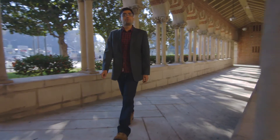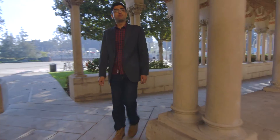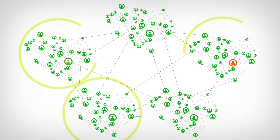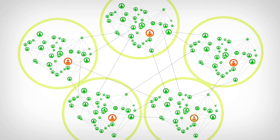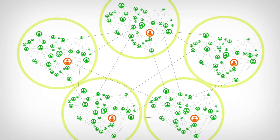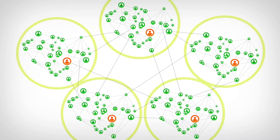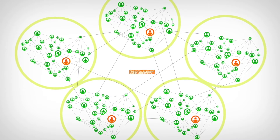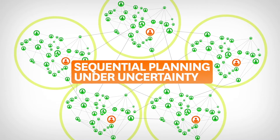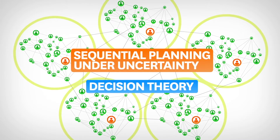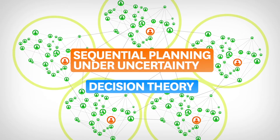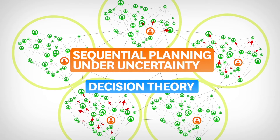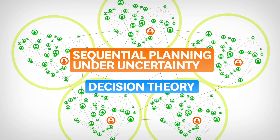How does the Heal algorithm recommend the most influential peer leaders? Heal partitions the social network to find closely connected communities and selects the best peer leader from each one. This best peer leader is chosen using state-of-the-art AI technologies like sequential planning under uncertainty and decision theory. In doing so, Heal ensures that HIV education is not localized to one part of the social network, but spreads widely over the entire population.